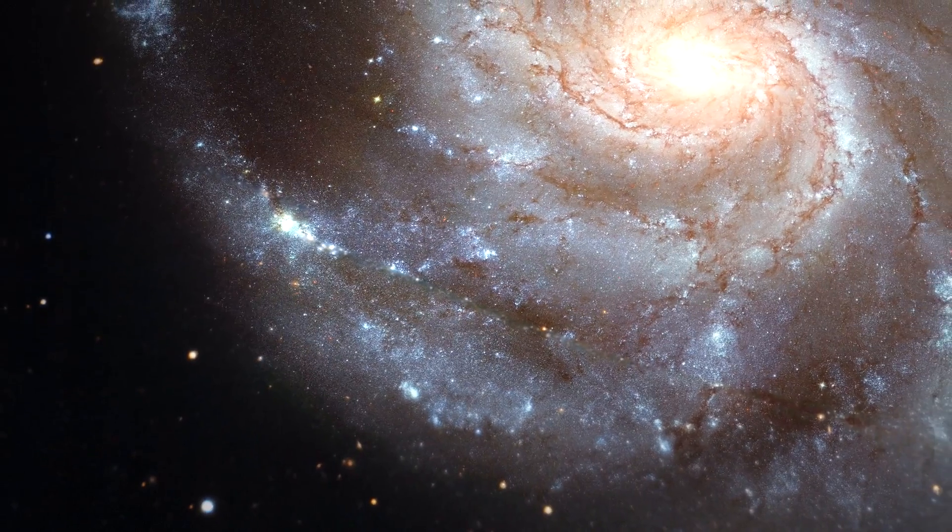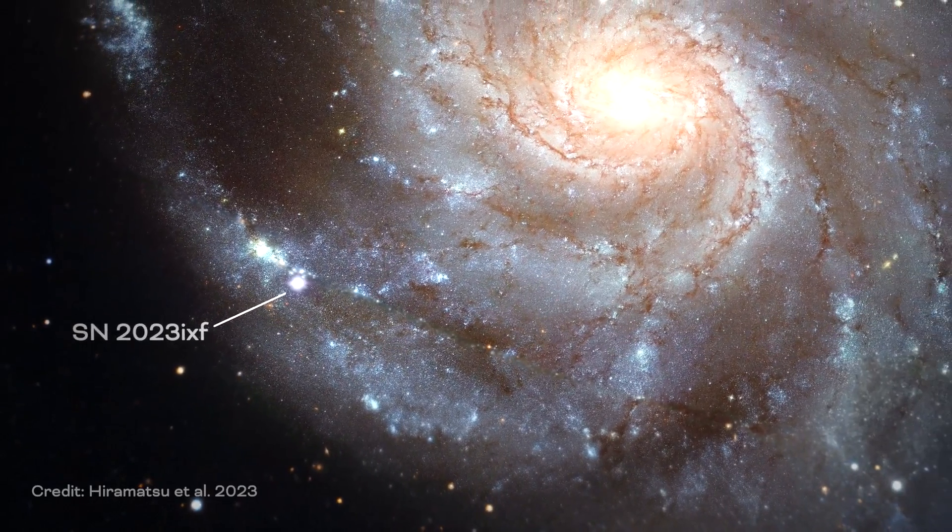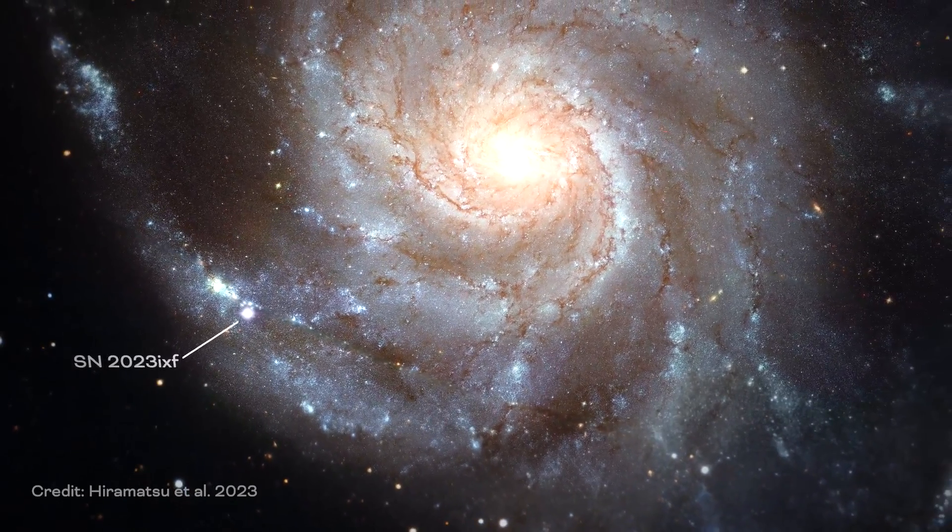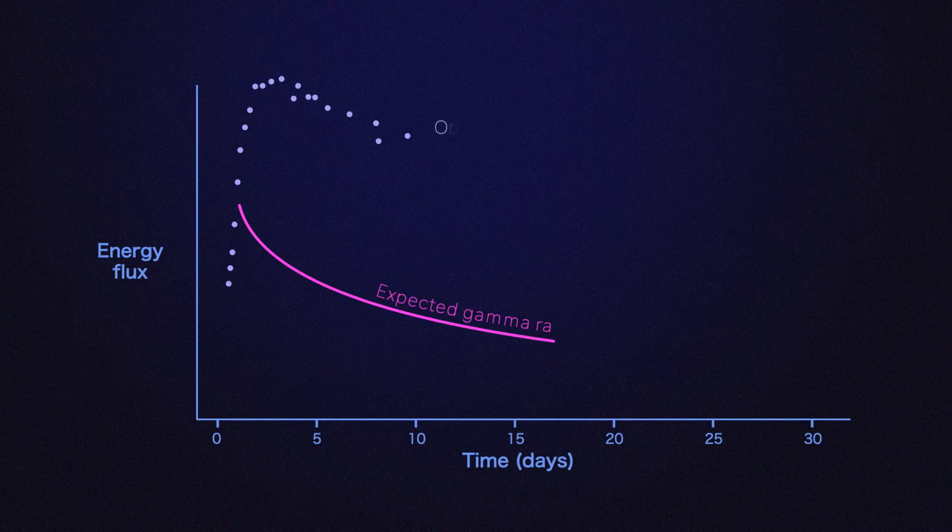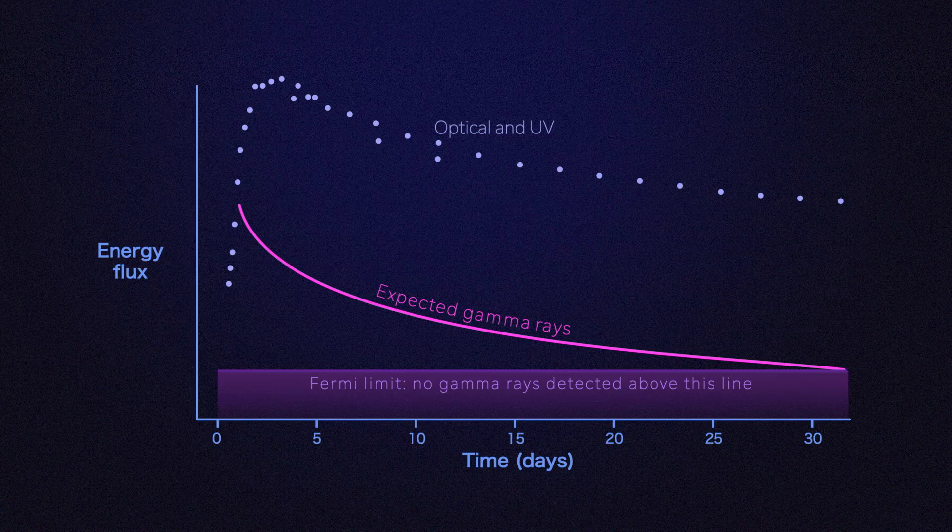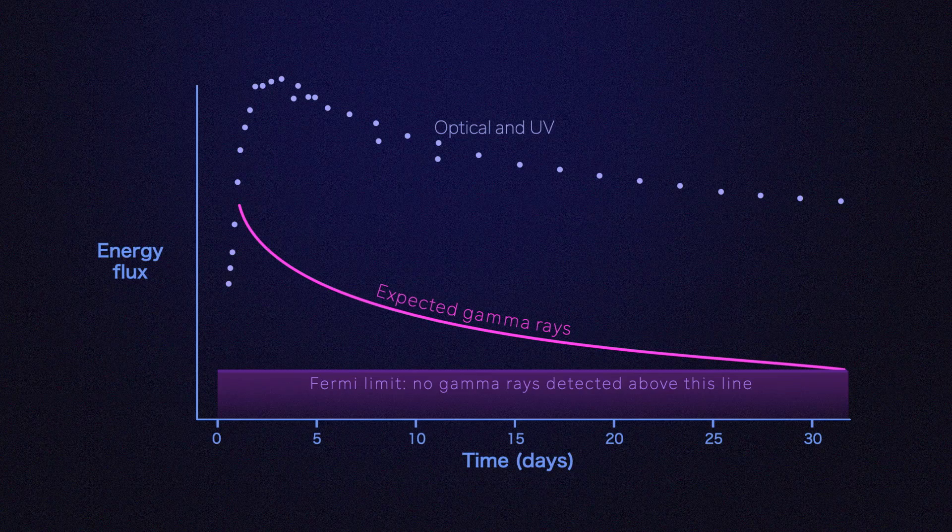In May 2023, Fermi observed the most luminous nearby supernova seen since the mission launched 15 years ago. It captured data from the first few weeks of the explosion, when scientists anticipated the greatest production of cosmic rays. But Fermi didn't see any gamma rays from the explosion.